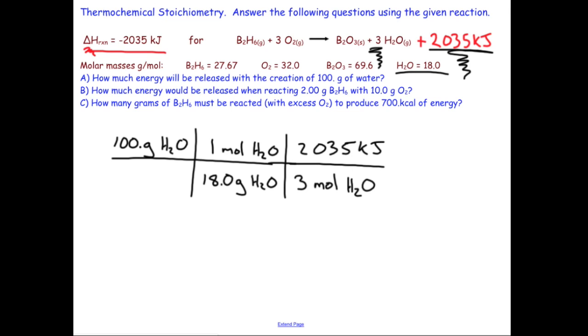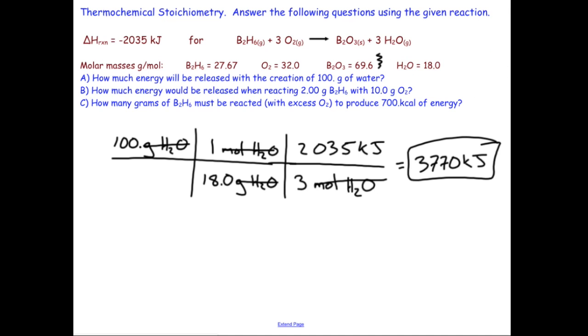Now look I have moles water canceling with mole water. Gram water canceling with gram water. I just need to execute this calculation. 100 divided by 18. There is a divide by 3 and then a times that 2000 number. This ends up being 3770 kilojoules. I am rounding trying to keep track of my sig figs.